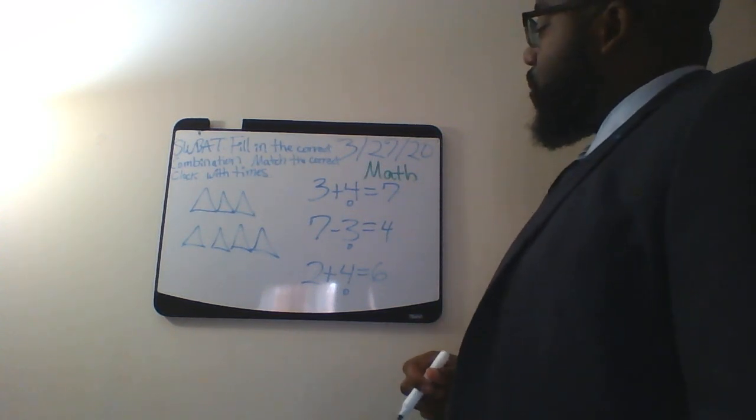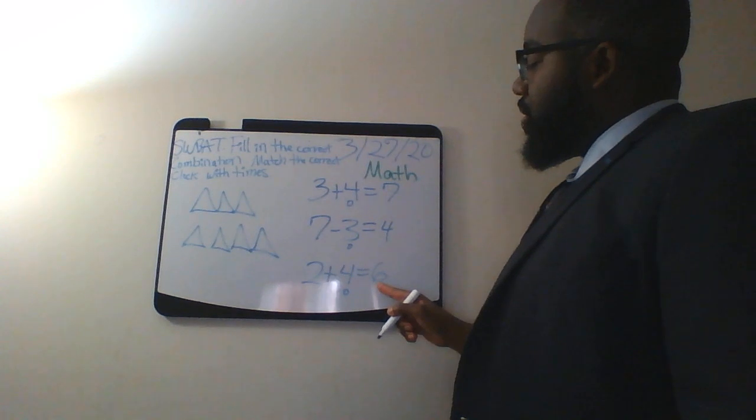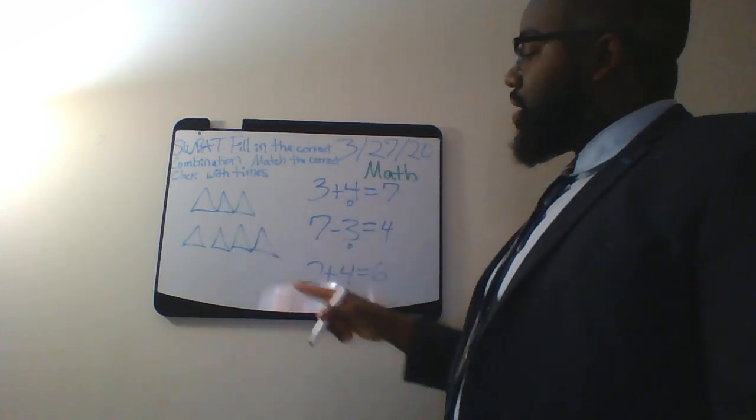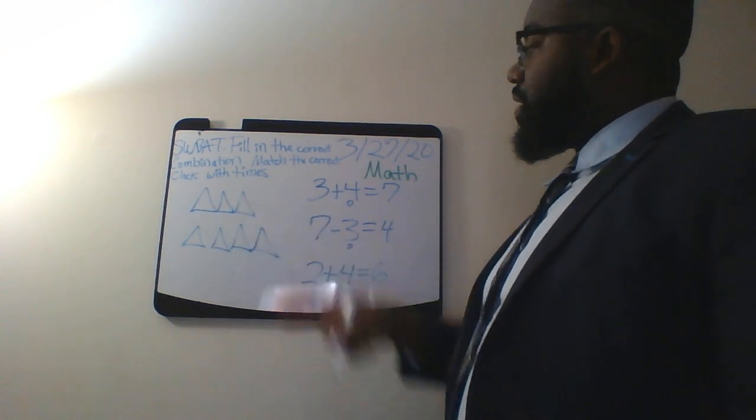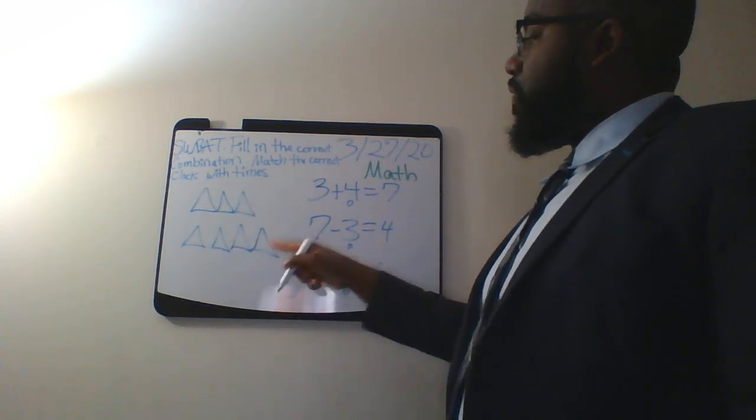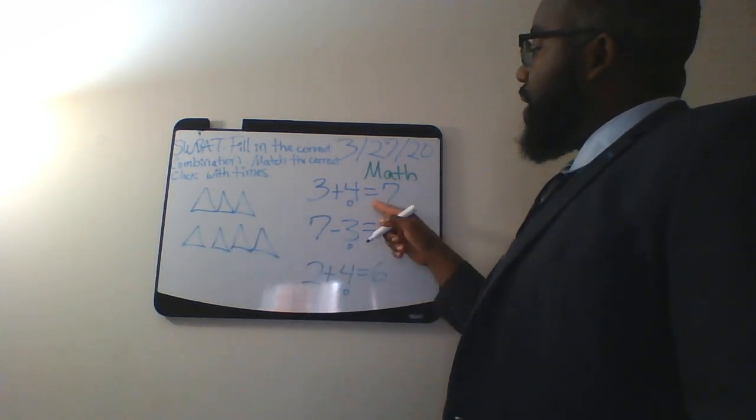So let's see, which will have 7? Let's see, I have 1, 2, 3 at top plus 1, 2, 3, 4. I have 1, 2, 3 at top plus 1, 2, 3, 4. Oh, it seems like it fits.